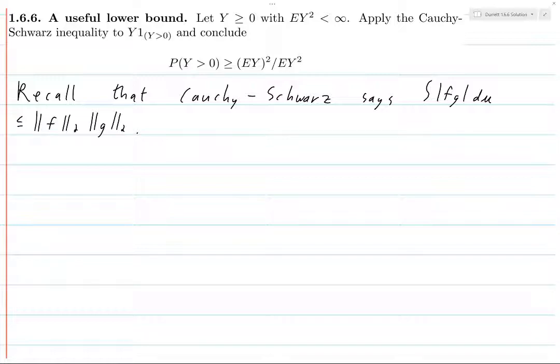Let's put this - because the thing that we're trying to prove is in terms of expected values, let's translate this. So this is just the expected value of absolute value of f times g.